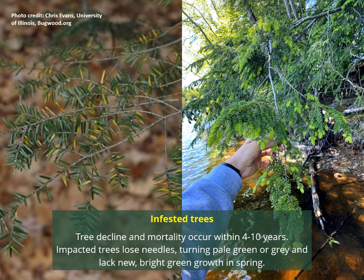While you shouldn't go around flipping branches to check individual trees from April to June, you can get a sense of overall tree health by looking at trees from a distance. Hemlock woolly adelgid really weakens trees and can kill them within four to ten years. The tree on the left isn't doing so great — it's lost a lot of needles and they're turning yellow. The tree on the right is healthy; you'll notice the bright green new growth in spring and early summer. If trees are turning pale green or gray and don't have that new growth, it might be worth taking a closer look.